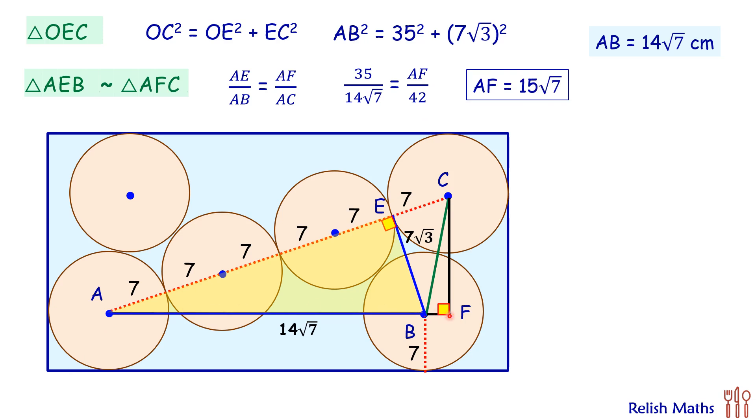Now AF is 15√7, and for the length of the rectangle, we have to add 7 on both sides. So length will be 14 plus 15√7 centimeters.